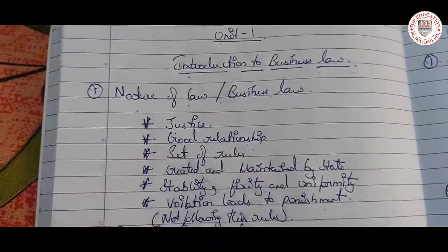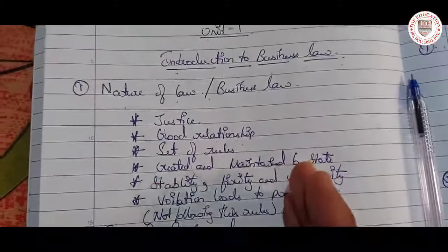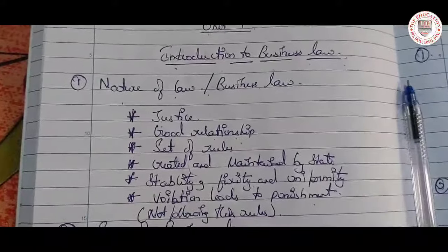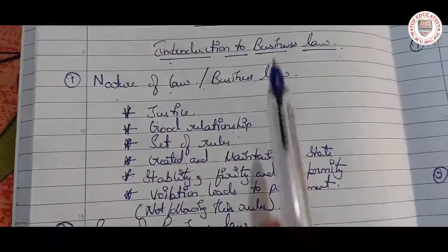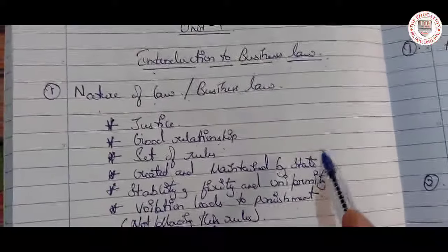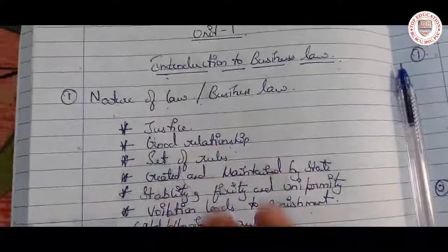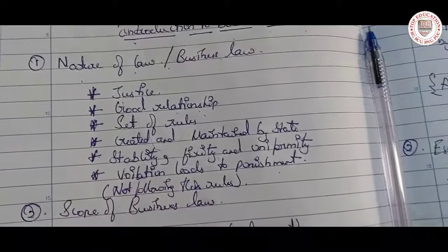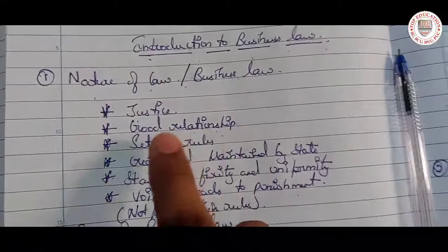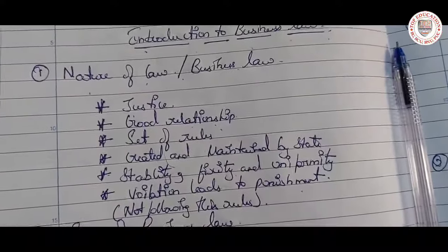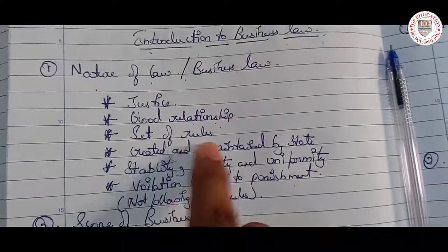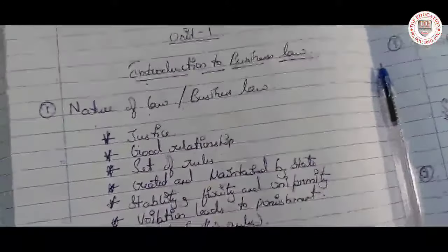Next is good relationship. If you have rules and regulations — see, in your college you have rules and regulations, so you respect your teacher, you respect your principal. Like that only, the buyer will respect the seller and the seller will respect the buyer. That creates a good relationship because there are some rules and regulations to follow.